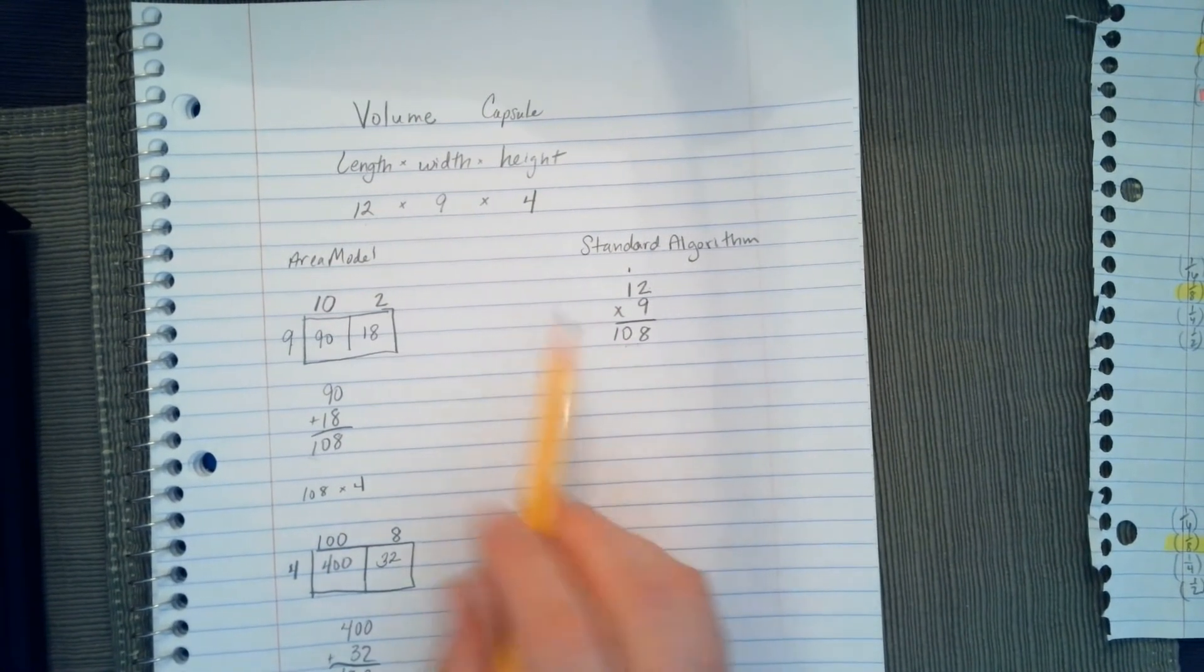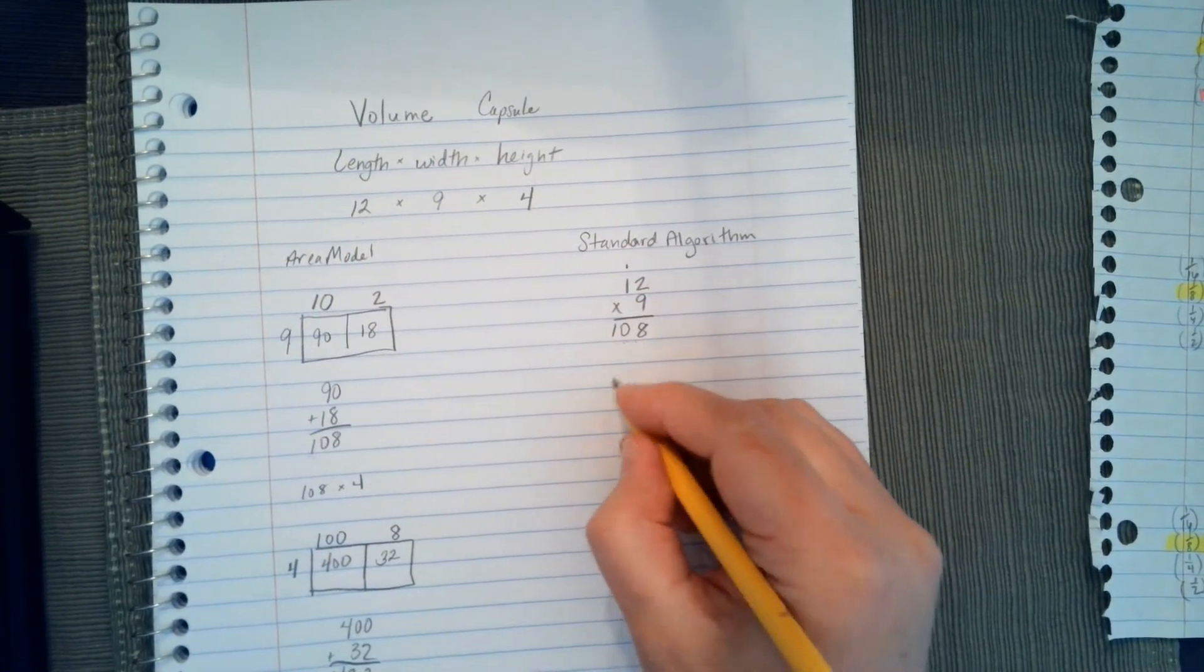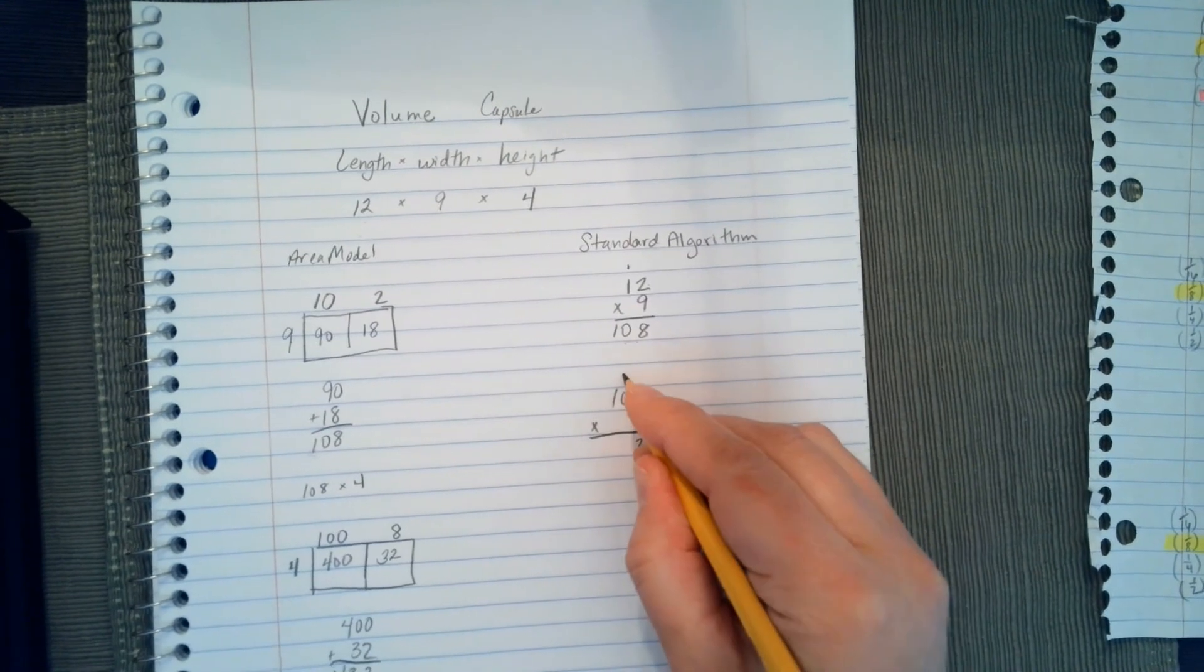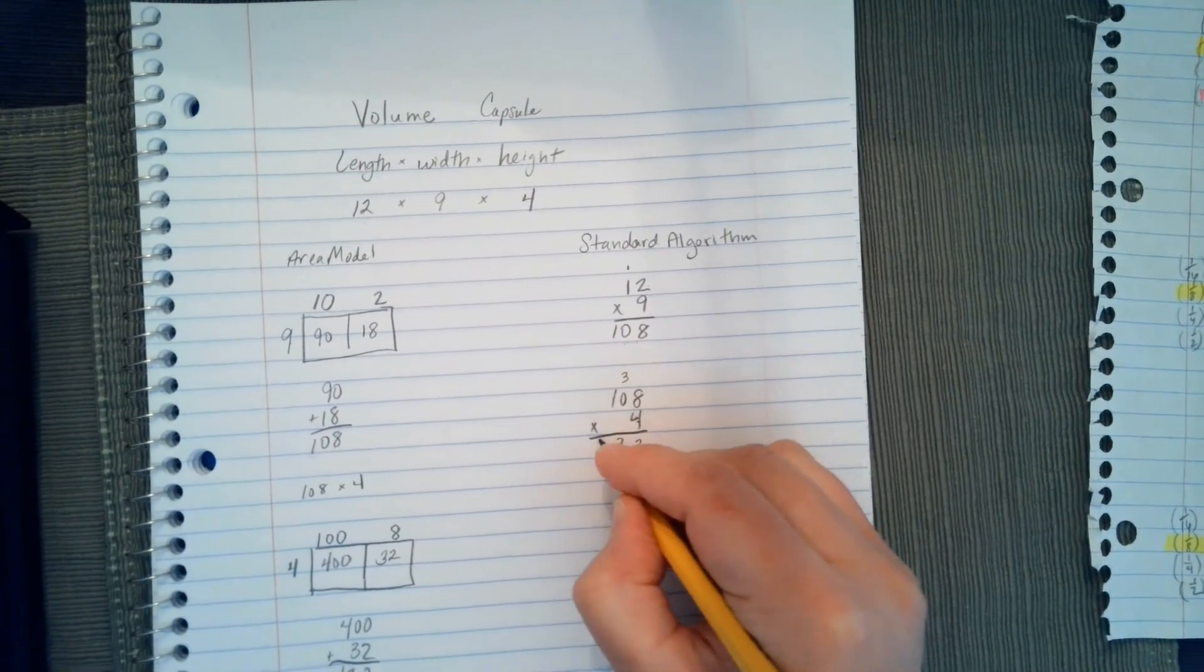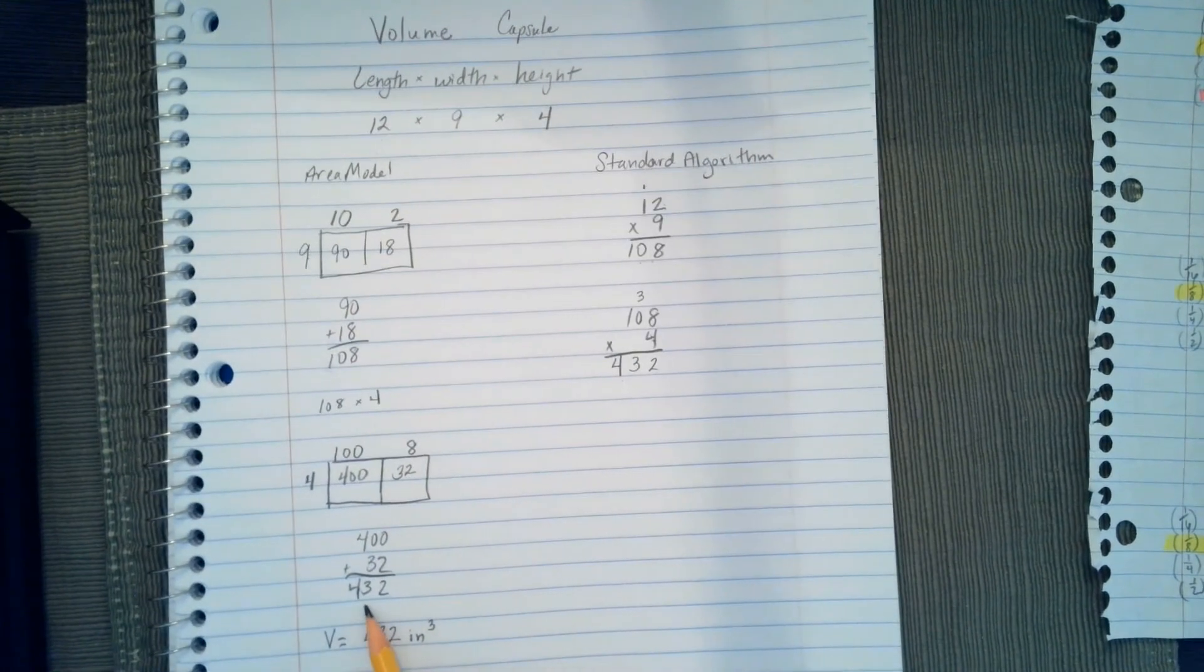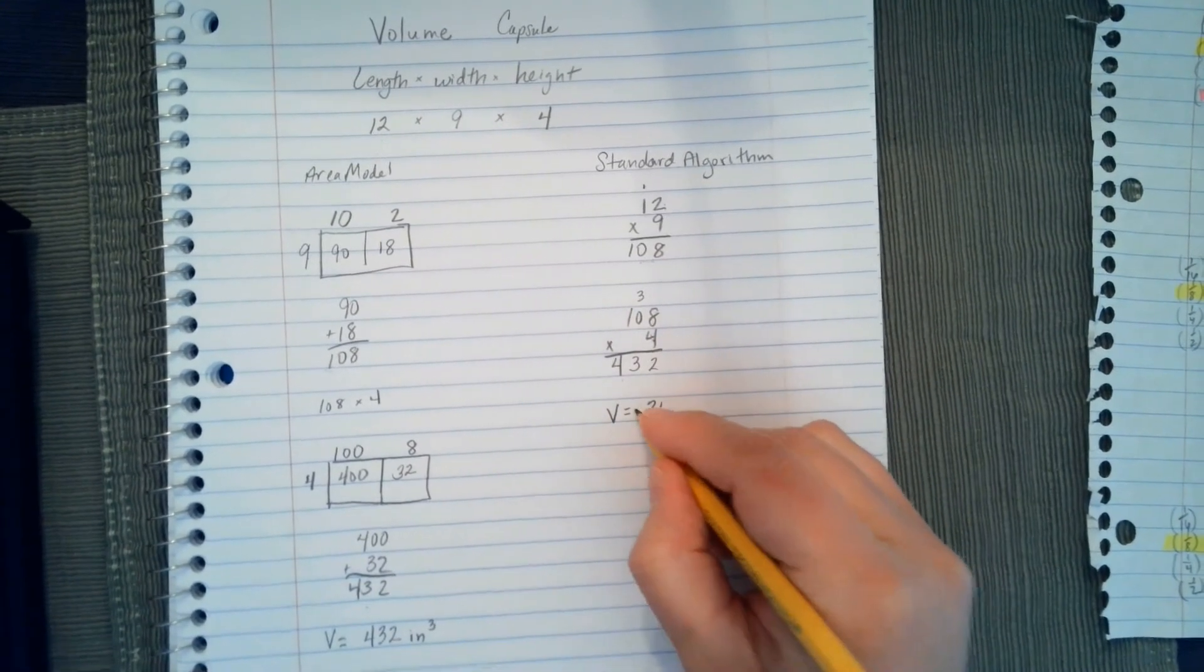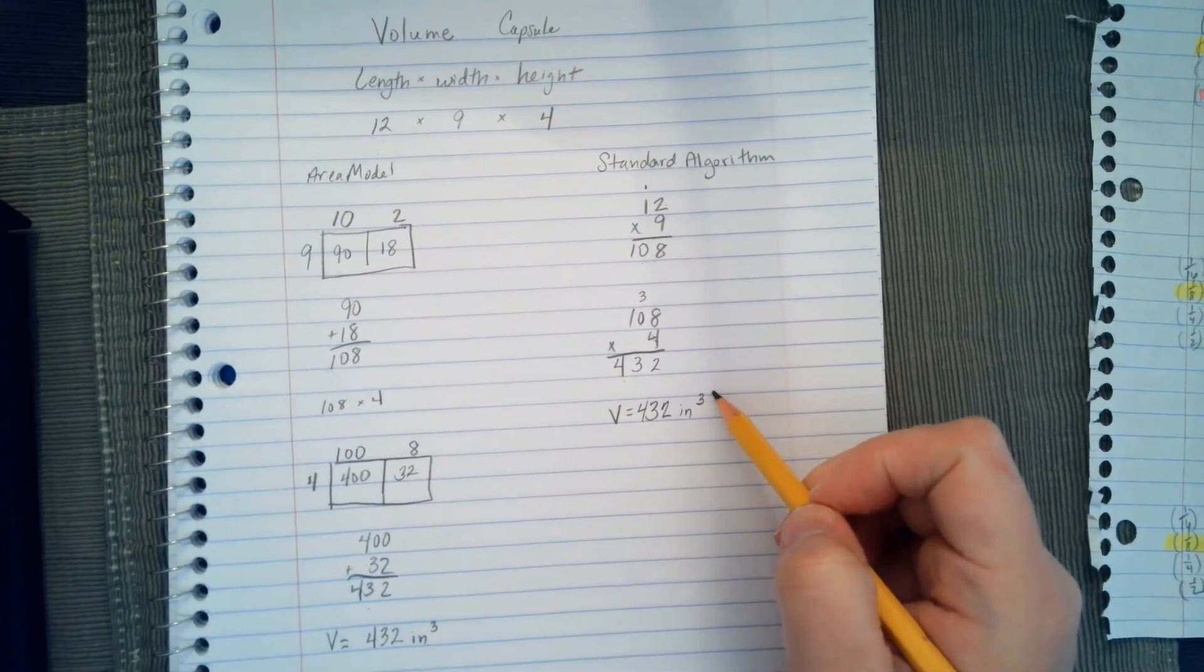I'm going to take that 108, because it's my length and width, and now I have to multiply it by 4, which is my height. So 108 times 4, 4 times 8 is 32, 4 times 0 is 0, plus 3 is 3, 4 times 1 is 4, and I end up with 432, which matches the same number I have here. So the volume for my capsule is 432 inches cubed, and it's cubed because we're finding volume.